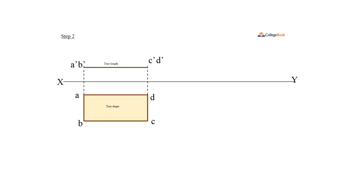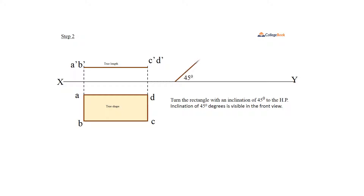Step 2: Turn the rectangle ABCD with an inclination of 45 degrees to the horizontal plane. The inclination of 45 degrees is visible in the front view. The edges A'B' and D' are maintained perpendicular to the vertical plane in this turn, hence they are in true length.